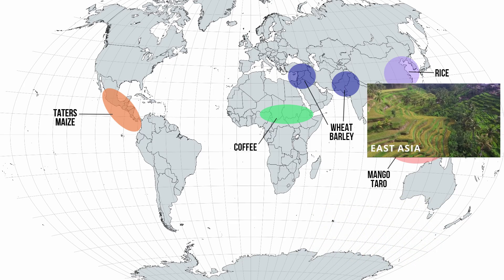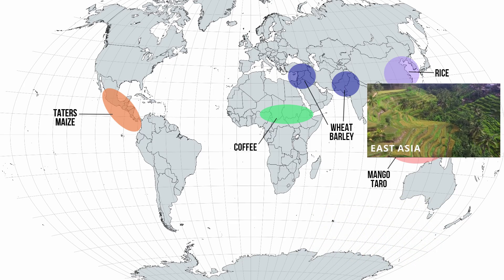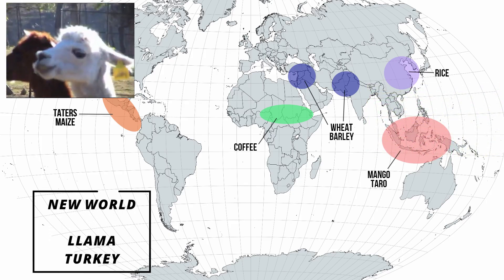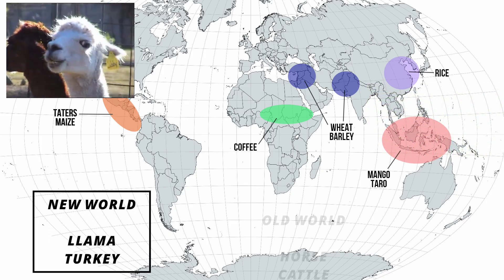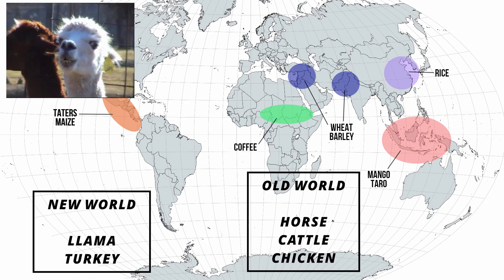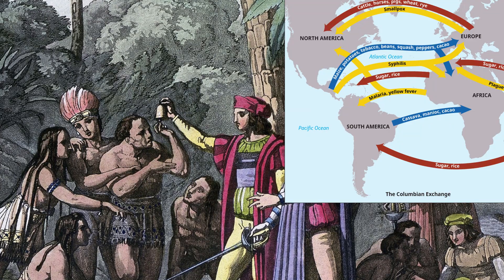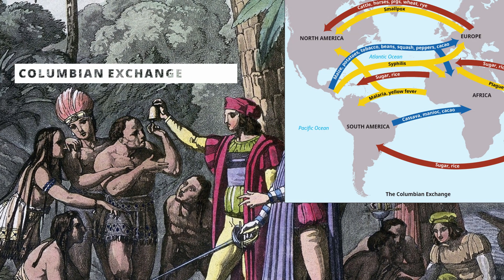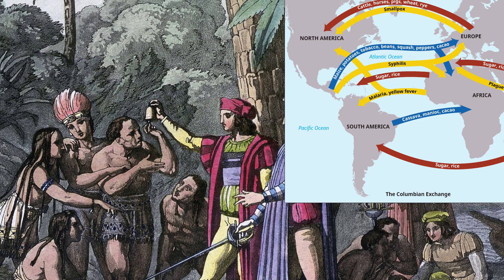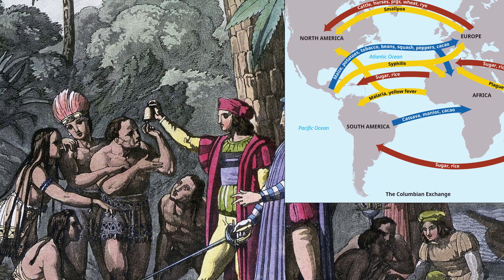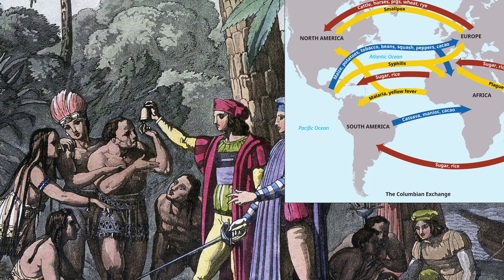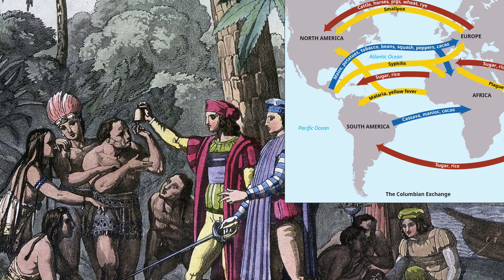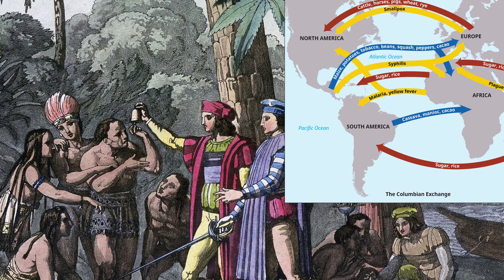Then lastly, we had rice in the East Asian region. In reference to animal domestication, the New World had llamas and turkeys, whereas the Old World had horses, chicken, and cattle. These forms of agriculture would not be isolated for very long, as Columbus is going to make his way across the Atlantic in search of God, gold, and glory, thus establishing the Columbian Exchange — the exchange of goods between the Old World and the New.